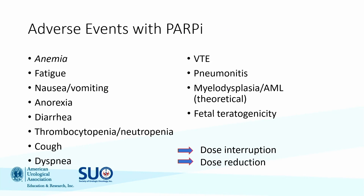Regarding adverse events with PARP inhibitors — it's important to consider which trials we're looking at, because patients in the early olaparib and rucaparib trials were heavily pre-treated, potentially resulting in greater toxicity than when used earlier in the disease course. In general, myelosuppression is one of the major adverse events, particularly anemia. Patients may need treatment held while receiving transfusions, then resumed at lower doses. Thrombocytopenia and neutropenia can also occur.